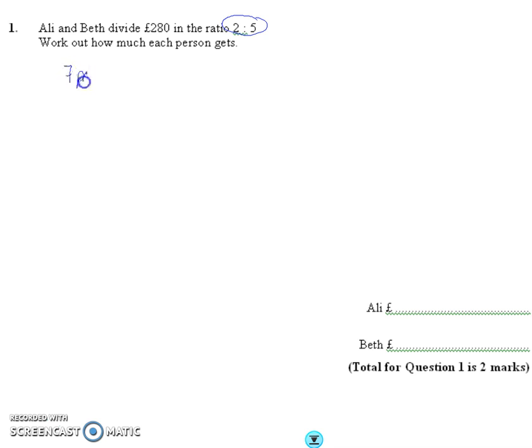I get 7 parts. 7 parts must be the whole total £280. So work out what 1 part is, do 280 divided by 7, and each part must be worth £40. That makes it nice and easy.